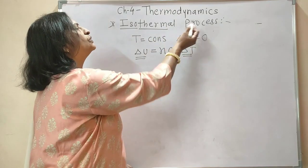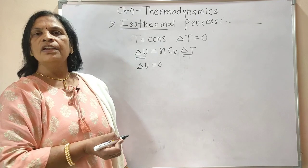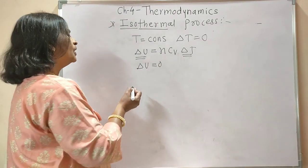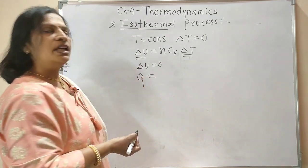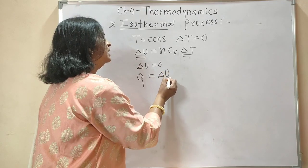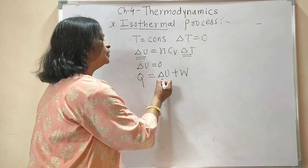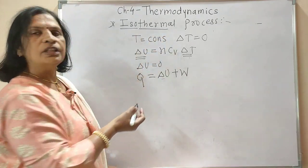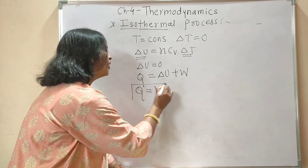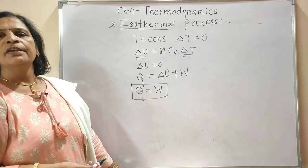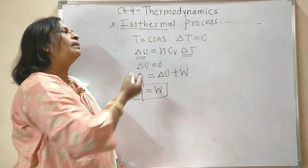Therefore, in the case of the isothermal process, change in internal energy ΔU is always equal to zero. According to the first law of thermodynamics, heat supplied to the system is used to increase its internal energy and perform work done. If ΔU equals zero, then for the isothermal process, heat supplied to the system is used entirely to perform work done, and therefore Q is equal to W.